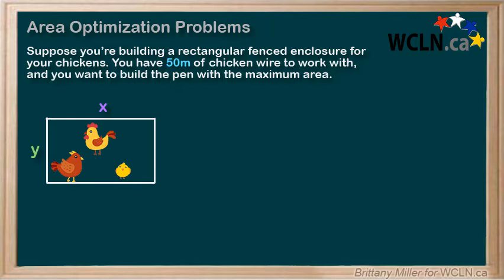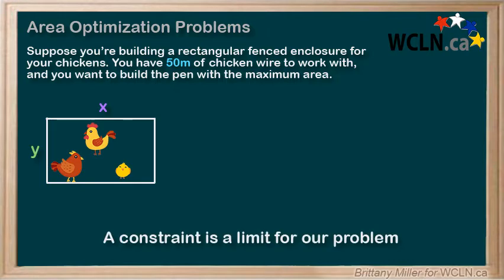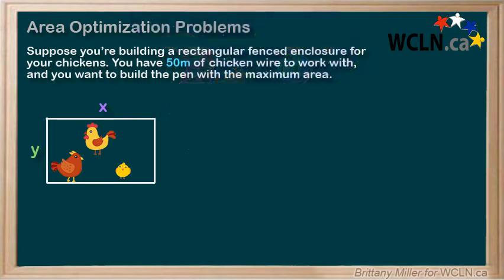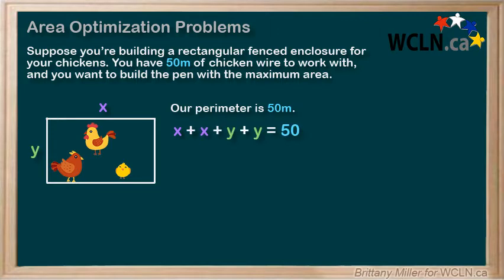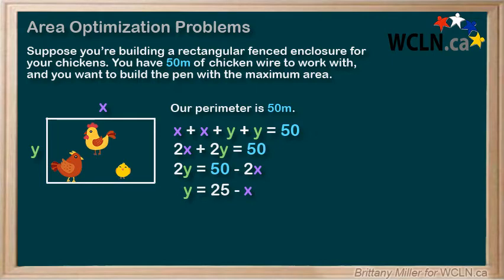Step 3: What are our constraints? A constraint is like a limit for our problem. We need this because if we don't have any constraints, the answer is just to make a chicken pen as big as the universe. So our constraint here is that our perimeter can only be 50 meters. The formula for perimeter is to add up all the sides: x plus x plus y plus y equals 50, or 2x plus 2y equals 50. This is more useful if we put it in the form y equals something. So we do some algebra: 2y equals 50 minus 2x, and then divide everything by 2 to get y equals 25 minus x.